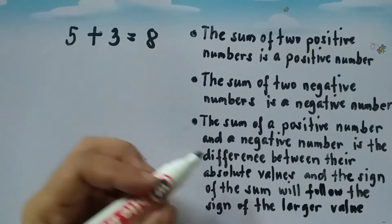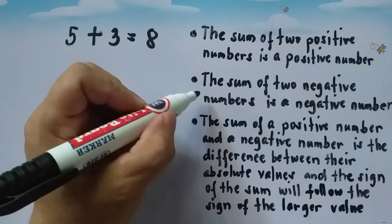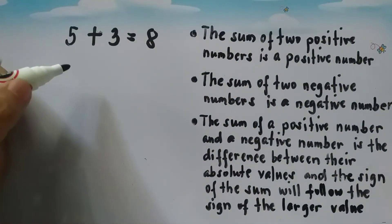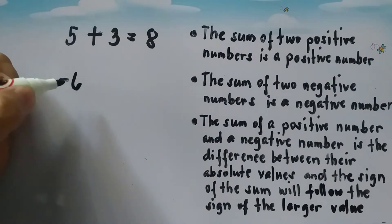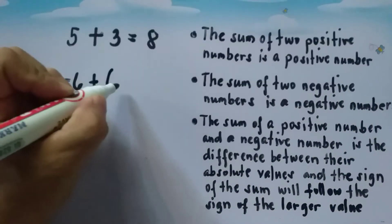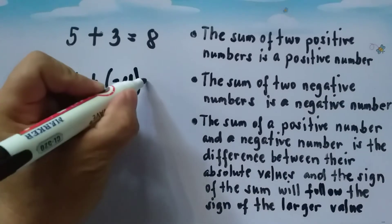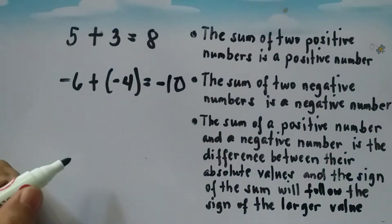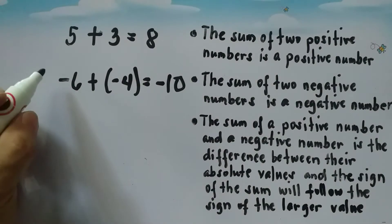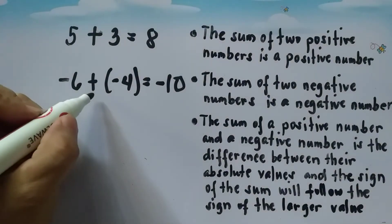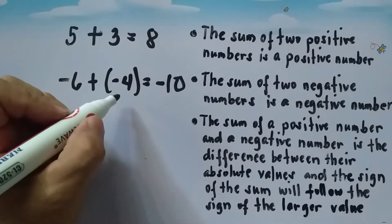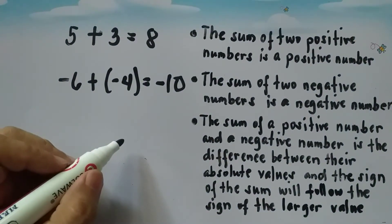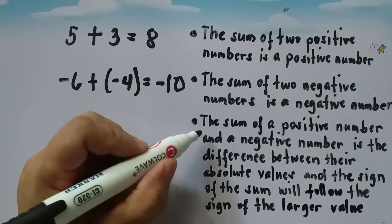Therefore, five plus three is equal to eight. The second rule: the sum of two negative numbers is a negative number. Say if we have negative six plus negative four, then we have a result of negative ten. For example, if we have six negative cases followed by four negative cases, then we have a total of ten negative cases.